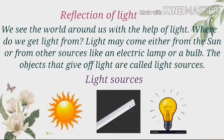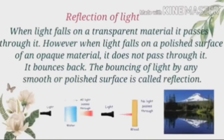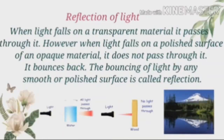When light falls on a transparent material, it passes through it. However, when light falls on the polished surface of an opaque material, it does not pass through it — it bounces back. The bouncing of light by any smooth or polished surface is called reflection.